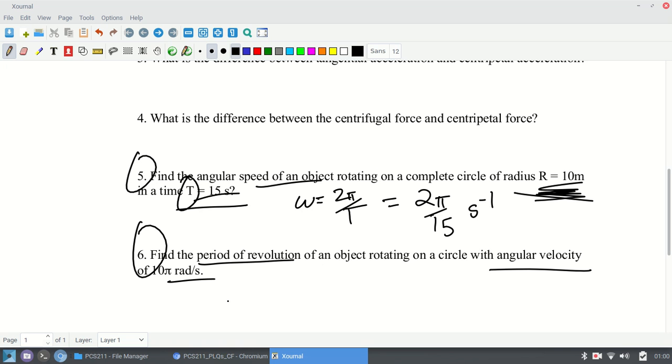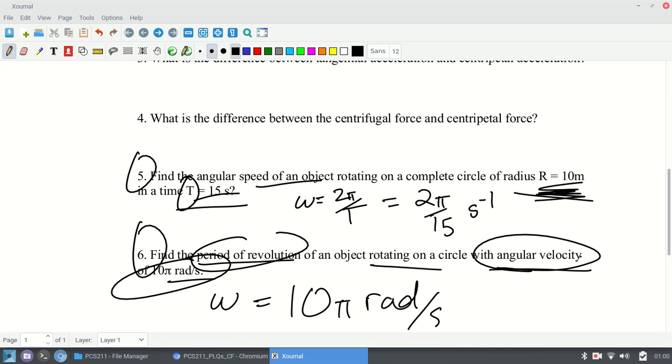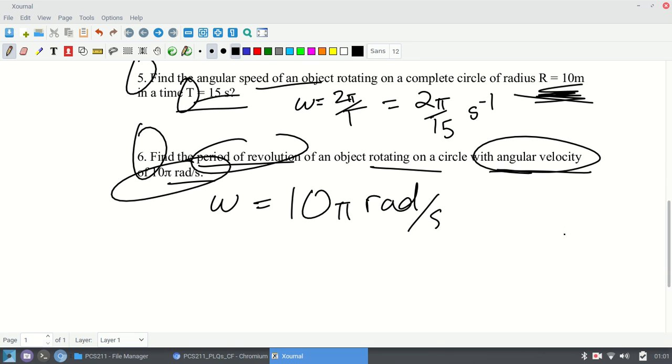Now, they give us find the period of revolution for an object rotating on a circle that has this angular speed or angular velocity of 10 pi. So they tell you that omega is 10 pi rads per second. By the way, rad is not a real unit, so you can really just leave it as seconds inverse. Since they have rad per second in this question, change that to rad per second, just so you're not off.